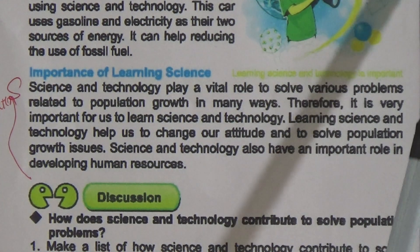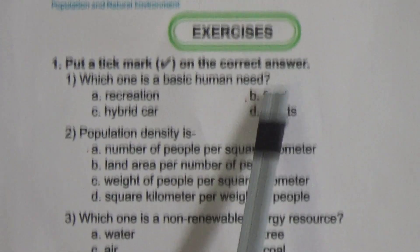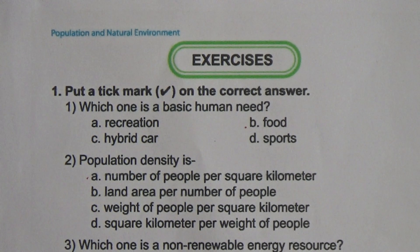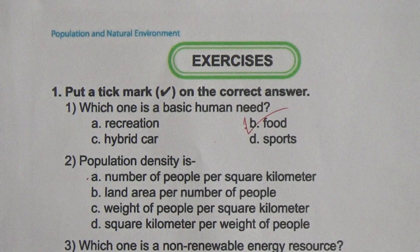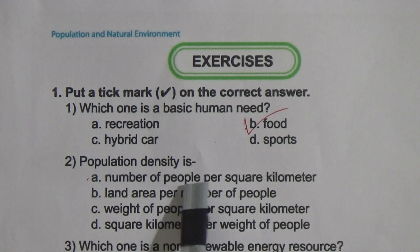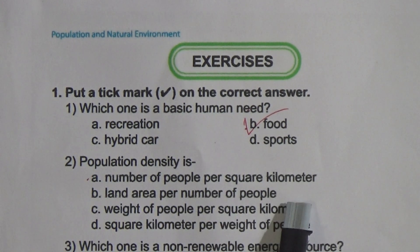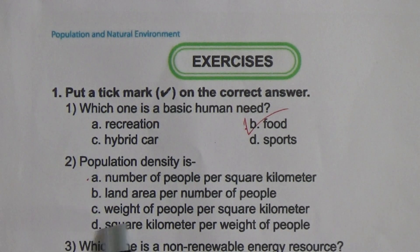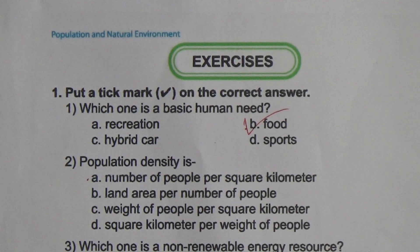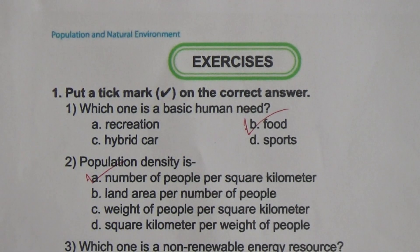Now let's come to the exercise. We have to put a tick mark on the correct answer. Which one is a basic human need? The options are: recreation, food, hybrid car, or sports. We know food is the basic human need. Next: population density is — number of people per square kilometer, land area per number of people, weight of people per square kilometer, or square kilometer per weight of people. The answer is number of people per square kilometer.